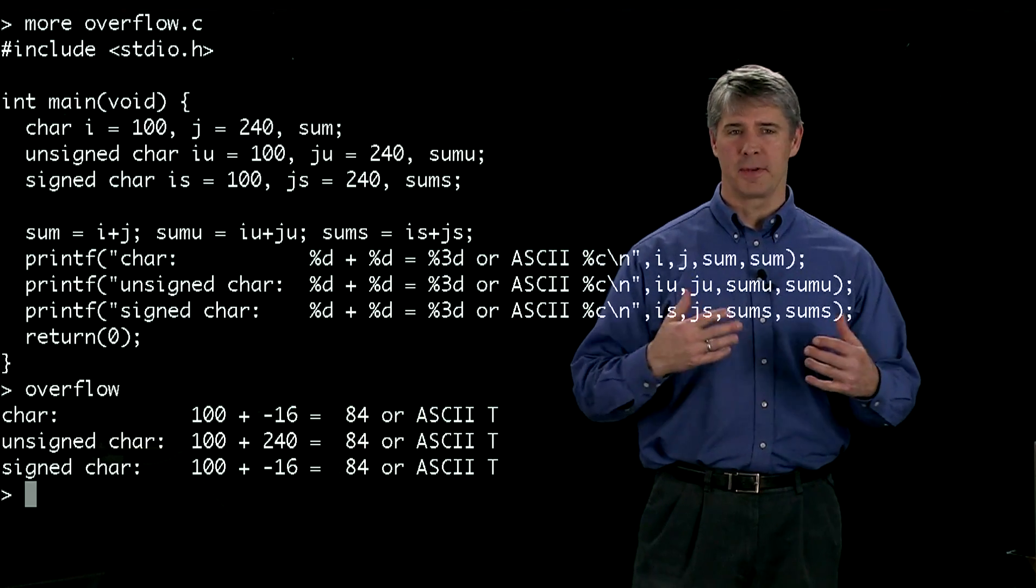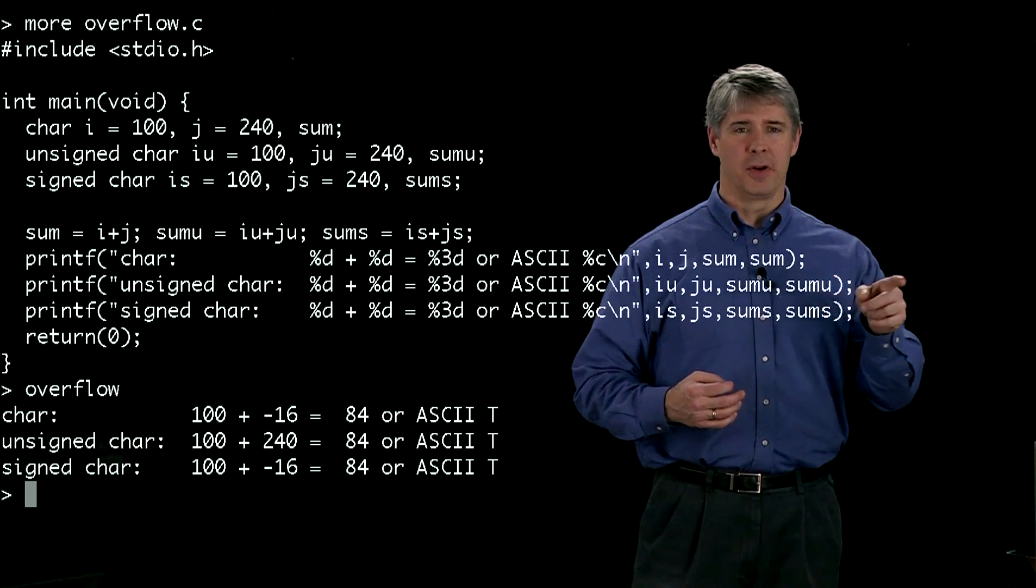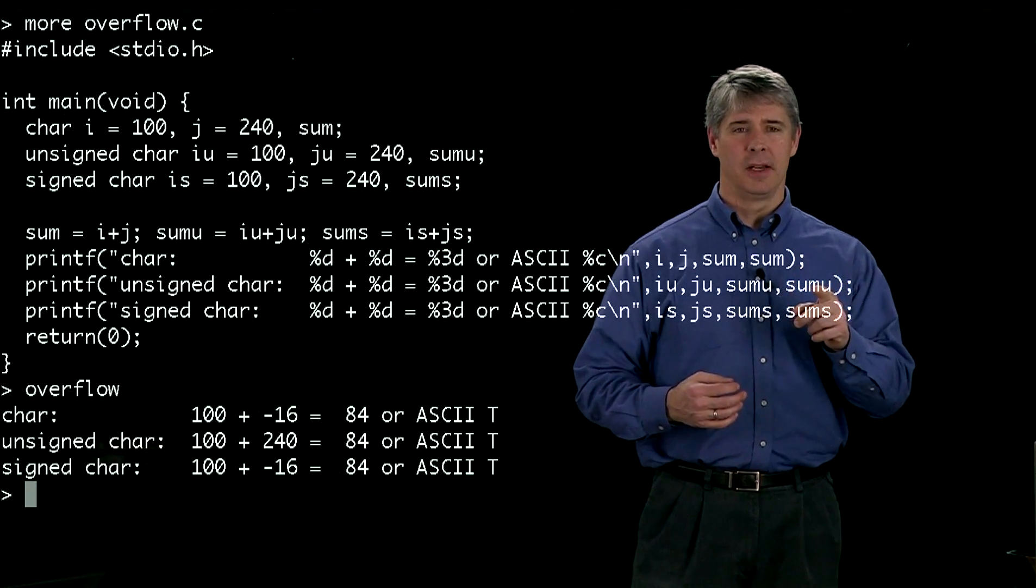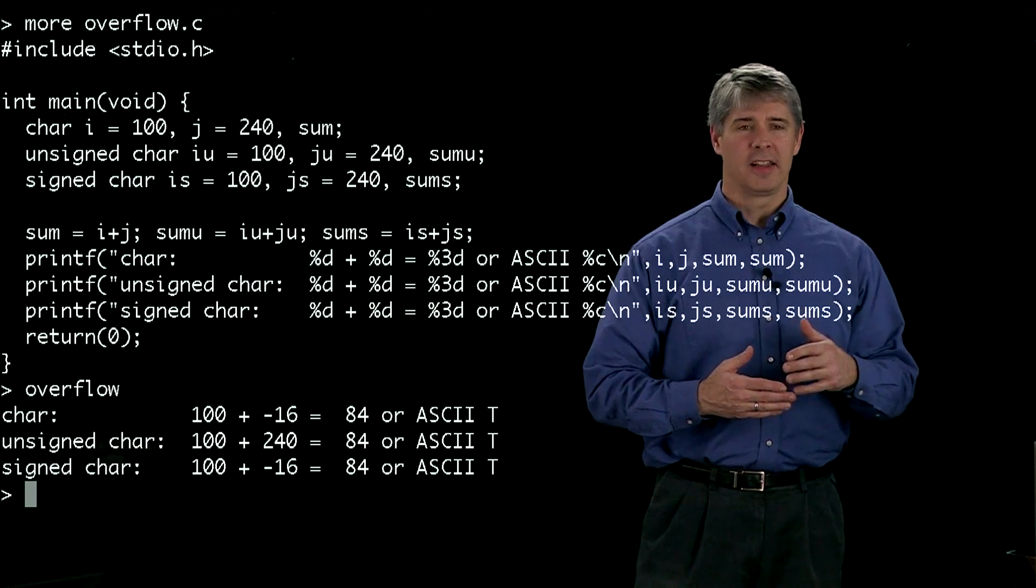It's because in the representation of 240, there's a 1 in the most significant bit column. And for 2's complement representation of a signed char, that's the sign bit.